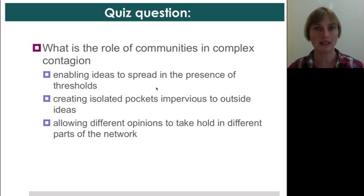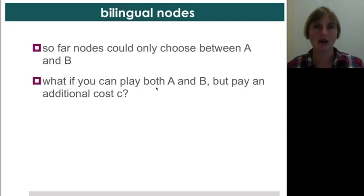It also then consequently allows different opinions to take hold in different parts of the network because each community may, it may seem as if though they independently can hold on to their beliefs. One last wrinkle that I would like to introduce, and this you can read about in the Easley and Kleinberg chapter 19, is that of bilingual nodes.